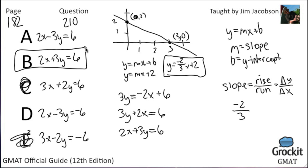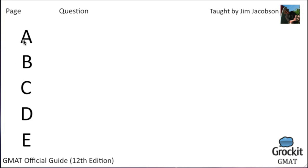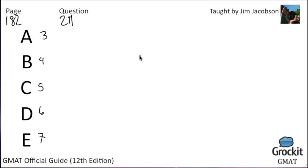We've completed that one and move on to number 211 on page 182 — no diagram this time. Answer choices: 3, 4, 5, 6, 7. If a 2-digit positive integer has its digits reversed, the resulting integer differs from the original by 27. By how much do the two digits differ?